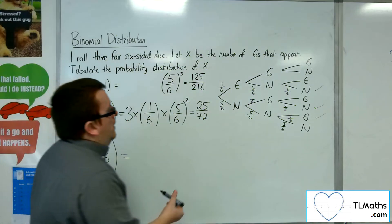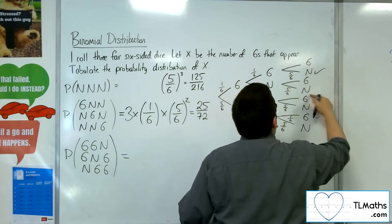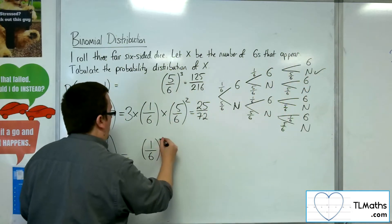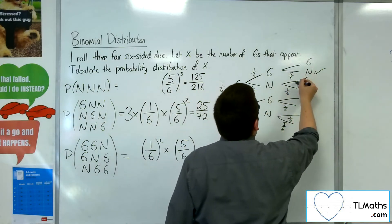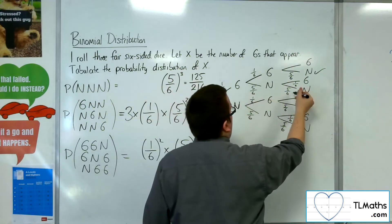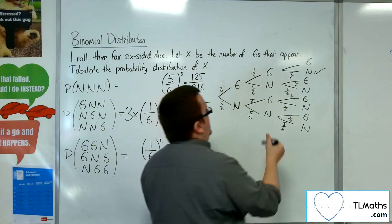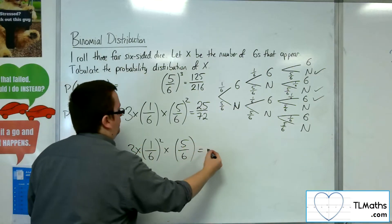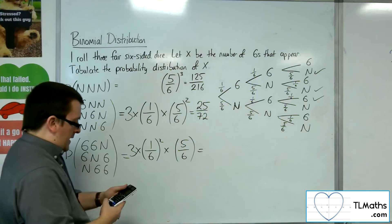So looking through, 6, 6, not a 6, so it would be 1 sixth times 1 sixth times 5 sixths. So 1 sixth squared times 5 sixths. Or I could have done 6, not a 6, 6, which is 1 sixth times 5 sixths times 1 sixth, which is the same as what I've got there. Or not a 6, 6, 6, which is 5 sixths times 1 sixth times 1 sixth, which is the same. And that's going to happen 3 different ways. So I'm going to have 3 times 1 sixth squared times by 5 sixths, and that gets me 5 over 72.